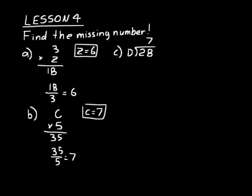Look at this problem — it's in long division format. We know what the dividend is and what the quotient is, but we don't know what the divisor is. In long division, you always multiply the divisor by the quotient. So we can say 7 times what equals 28, which means 7 times 4 equals 28. We can rewrite that as 7 times d equals 28, so d equals 4.